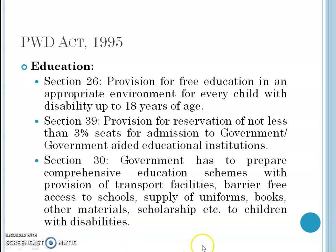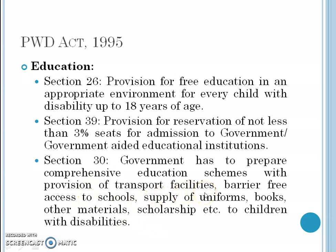Section 39 provides for reservation of not less than 3% of seats for admission to government or government-aided educational institutions, meaning any such institution must reserve 3% of seats for physically disabled people. Section 30 says the government must prepare comprehensive education schemes with provision of transport facilities for such people, barrier-free access to schools, supply of uniforms, books, other materials, and scholarships to children with disability.